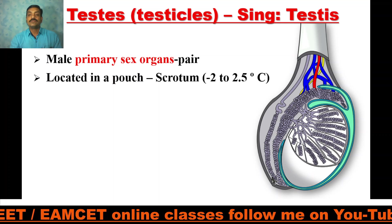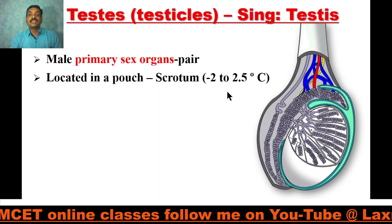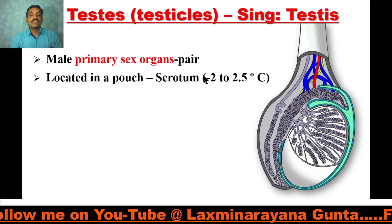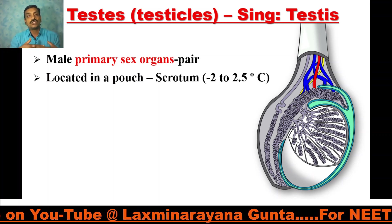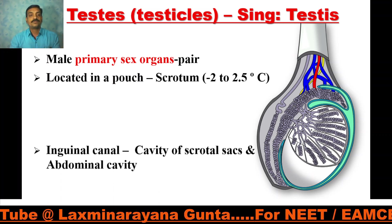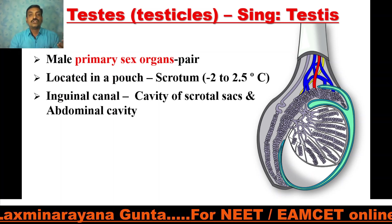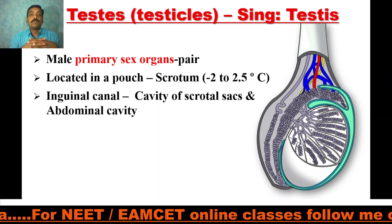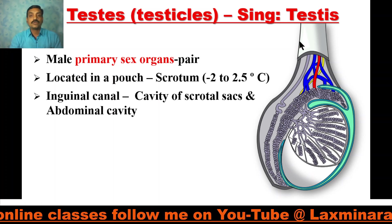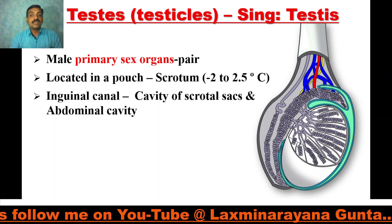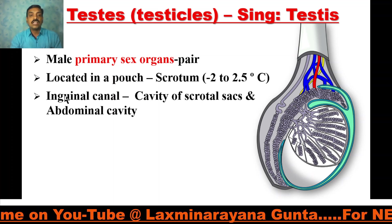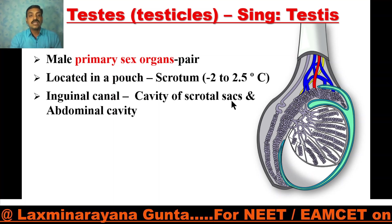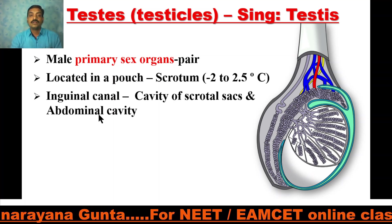The scrotum is very useful in maintaining 2 to 2.5 degrees lesser temperature than the body temperature, which is the optimum temperature for spermatogenesis or the production of sperms. These testicles are initially in the abdominal cavity, and by the 9th month of pregnancy they descend into the scrotum through a canal called the inguinal canal. The inguinal canal separates the cavity of the scrotal sac and the abdominal cavity.